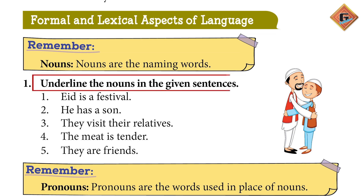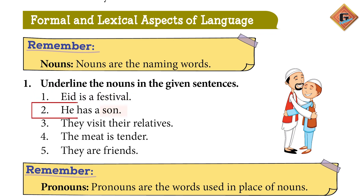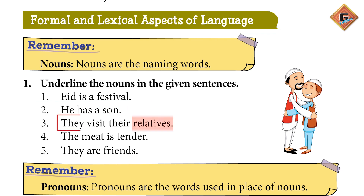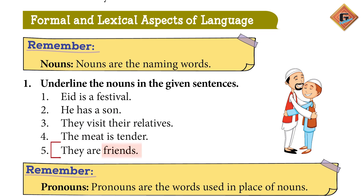Eid is a festival — here Eid is a noun. He has a son — son is a noun. They visit their relatives — relatives is the noun here. The meat is tender — meat is the noun here. They are friends — as you can see on the screen, friend is underlined.